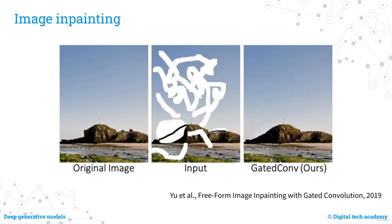Image inpainting is the technique that allows you to reconstruct an image that lacks pixels — for example, because they have been erased. In this slide, you can see an input image from which some pixels have been removed in the centre, while on the right there is the corresponding reconstructed image. You can compare this with the original on the left to see that the result is quite impressive.